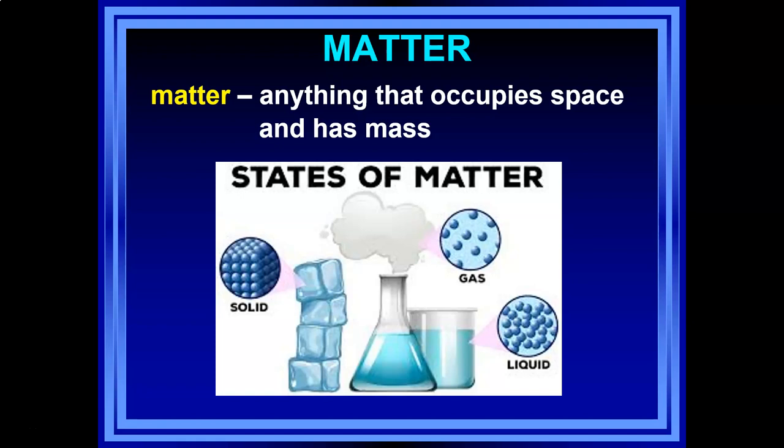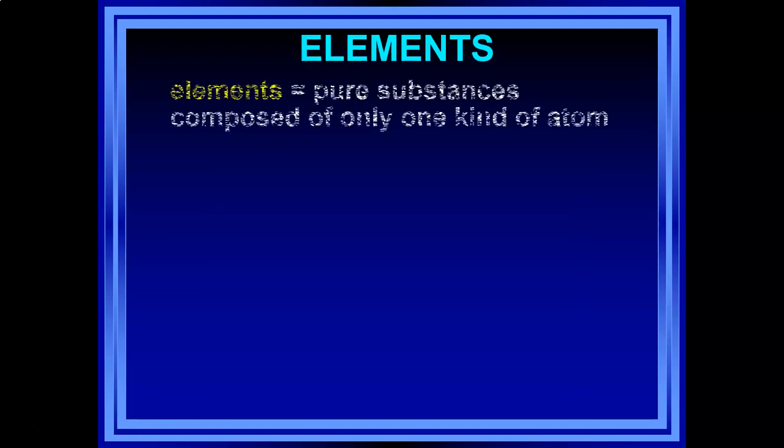That has to do with density — how close the molecules are to each other. When we think about our human body: solid matter includes our organs, tissues, and bones; liquid matter includes blood, digestive juices, and cerebrospinal fluid; and we're also processing gases like oxygen that we breathe in and carbon dioxide that we breathe out. So our body interacts with all states of matter, and matter is composed of elements.